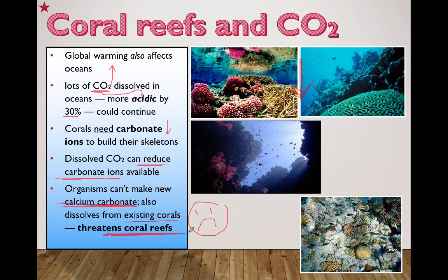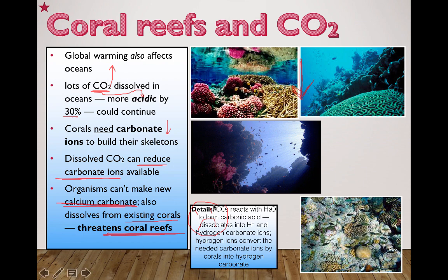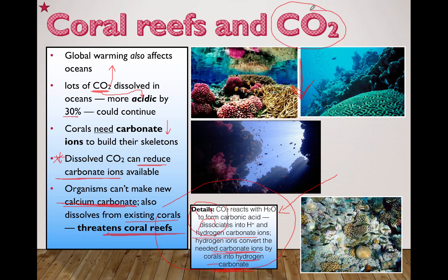Here's a bit of extra detail — a level six understanding. If you want to explain the actual relationship between carbon dioxide, carbonic acid, and hydrogen carbonate ions, take a look at this box. Carbon dioxide reacts with water to form carbonic acid; it dissociates into hydrogen ions and hydrogen carbonate ions. The hydrogen ions then convert the carbonate ions needed by coral into hydrogen carbonate — which is why extra CO₂ in the ocean is so harmful.